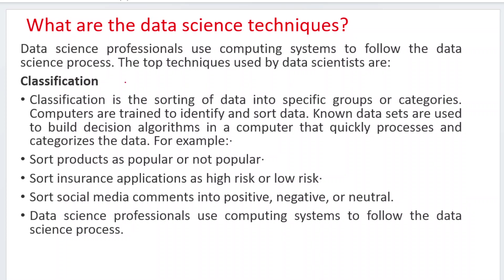Among those techniques, the first one is classification. What is meant by classification? This is one of the important questions. Classification is a technique where we are trying to sort data into some specific groups or categories. For example, if a person is having COVID or not, I want to categorize into COVID persons and non-COVID persons based upon the symptoms — classifying into COVID and non-COVID persons. That is called sorting.